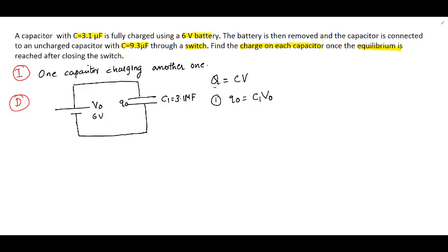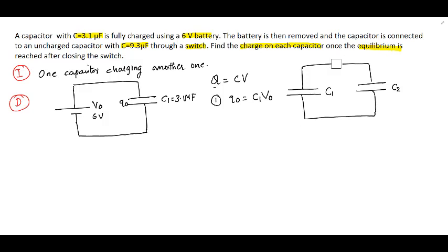After disconnecting from the battery, this capacitor with charge Q0 is connected to a second capacitor of different capacitance through a switch. We can draw a diagram showing this situation: capacitor C1 connected to capacitor C2 through a switch. Before connecting to C2, capacitor C1 had a voltage V0 across its plates and a charge Q0 on its plates. As we close the switch, charges from capacitor C1 will start to flow to capacitor C2.